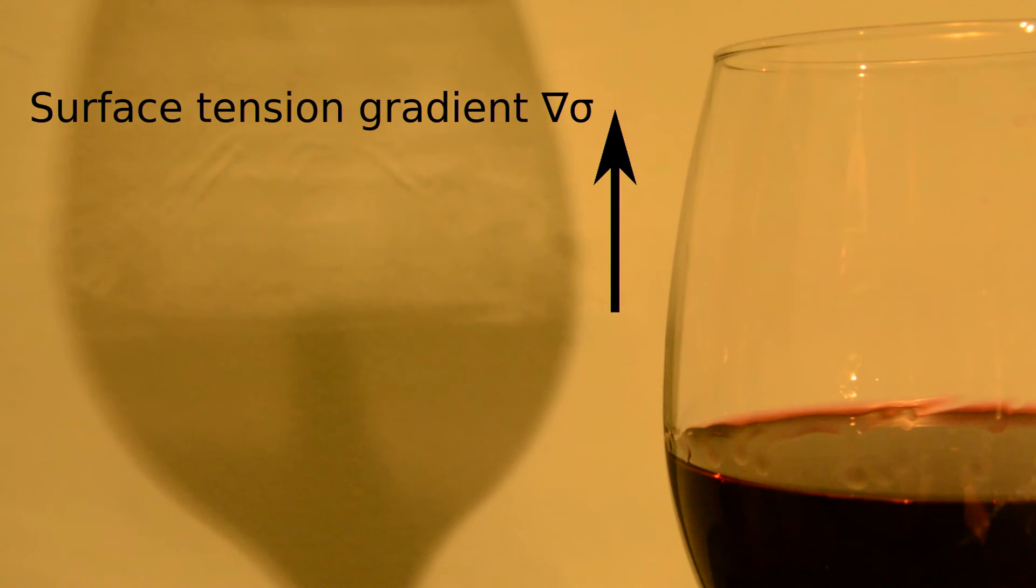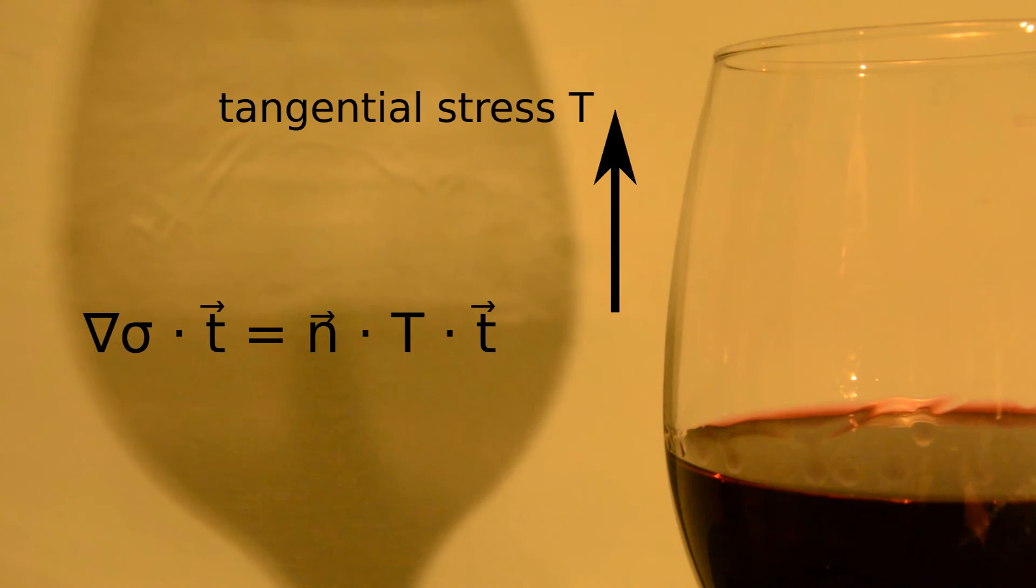Since the alcohol evaporates faster, its concentration in the thin film is reduced which in turn increases the surface tension due to the higher content of water in the film. The stress balance equation at a free surface states that the local gradient in surface tension equals a tangential stress at the free surface of the liquid and thus serves as a boundary condition for the Navier-Stokes equations similar to wind forcing in the ocean.